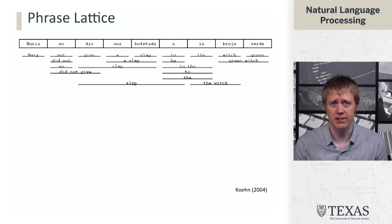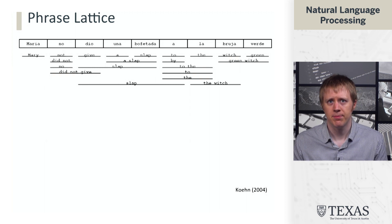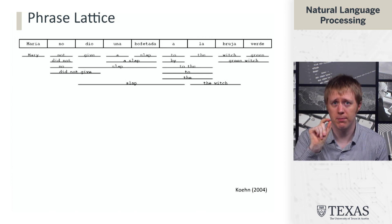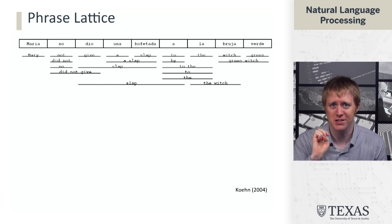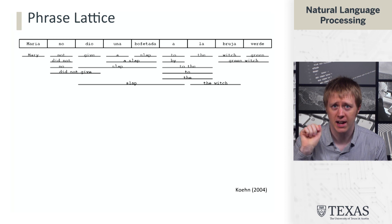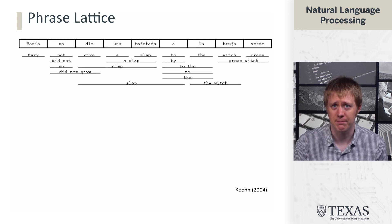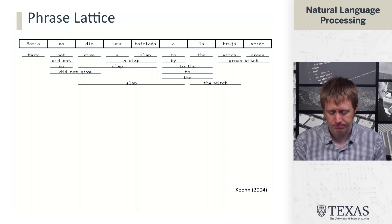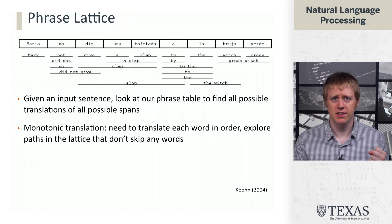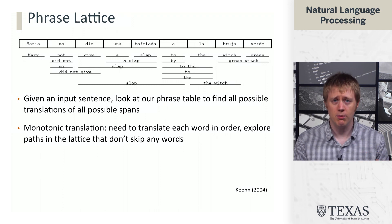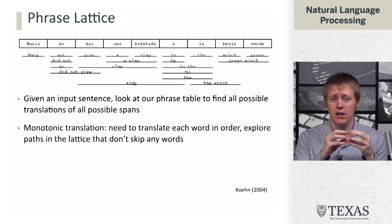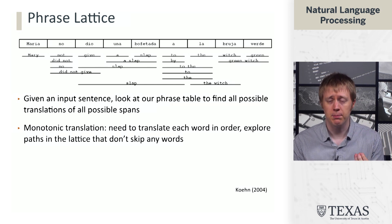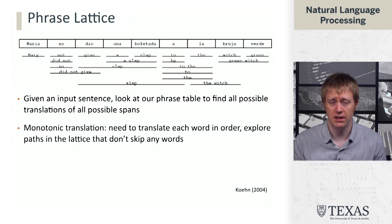So the way we produce these translations is we form what's called a phrase lattice. What we do is we take our input sentence here, Maria no dio una bofetada a la bruja verde. And we look at each possible phrase match with our phrase table from this sentence, which is now going to be Spanish, not French. So on the Spanish side, una bofetada, for example, can translate as a slap. And so that's something that we would have in our phrase table here. So we find all these possible translations. And now what we're going to start with and what we'll focus most on is the problem of monotonic translation. How do we walk through paths in this lattice to translate every word from Spanish exactly once, not skipping any words, and stitch together a translation into English that looks good?